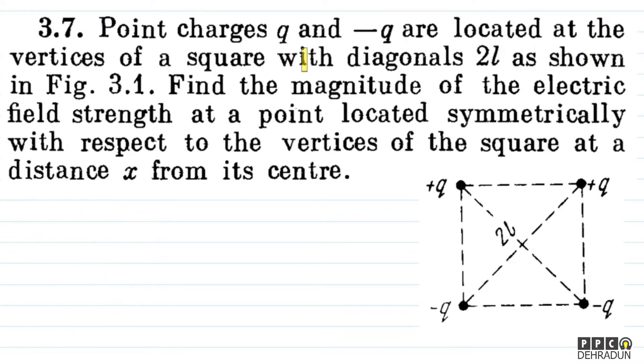The question says, point charges q and minus q are located at the vertices of a square with diagonals 2L as shown in figure. Find the magnitude of the electric field strength at a point located symmetrically with respect to the vertices of the square at a distance x from its center.